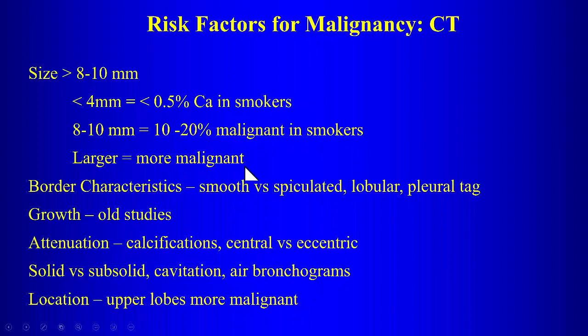Spiculated borders increase concern for malignancy. Lobular borders and pleural tags — where the lesion extends and causes puckering of the pleura — also increase suspicion. For attenuation, central calcification is what we look for to say a lesion is benign. Eccentric calcification can be either benign or malignant, so it doesn't help you. Solid versus subsolid, cavitation, and air bronchograms are all things to describe when evaluating the lesion on CT.